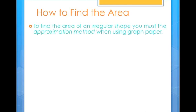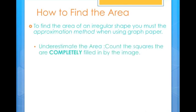An image will be placed over the graph paper and you will count the number of grid squares. First, you will underestimate the area of the image given by counting the number of grid squares that are completely covered by the image.